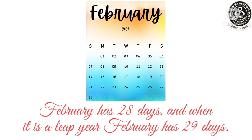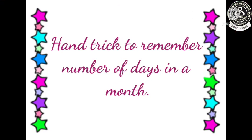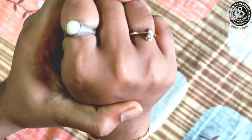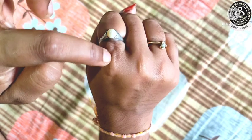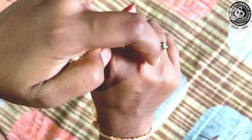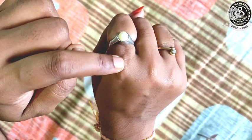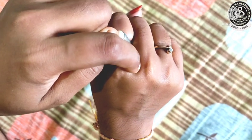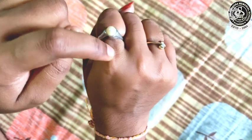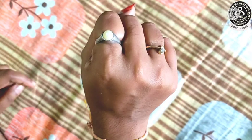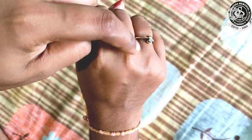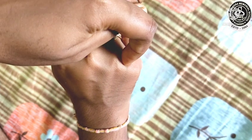Okay, so now let us see one hand trick to remember the number of days in a month. Children, here you can see that I have kept my hand like this. You can see that this portion is above this portion — the bone portion and the muscles portion. The bone portion you will take as 31 days, and this one as 30 days, alternating like this. So, the first month from where we start is January, then February, March, April, May, June, July.